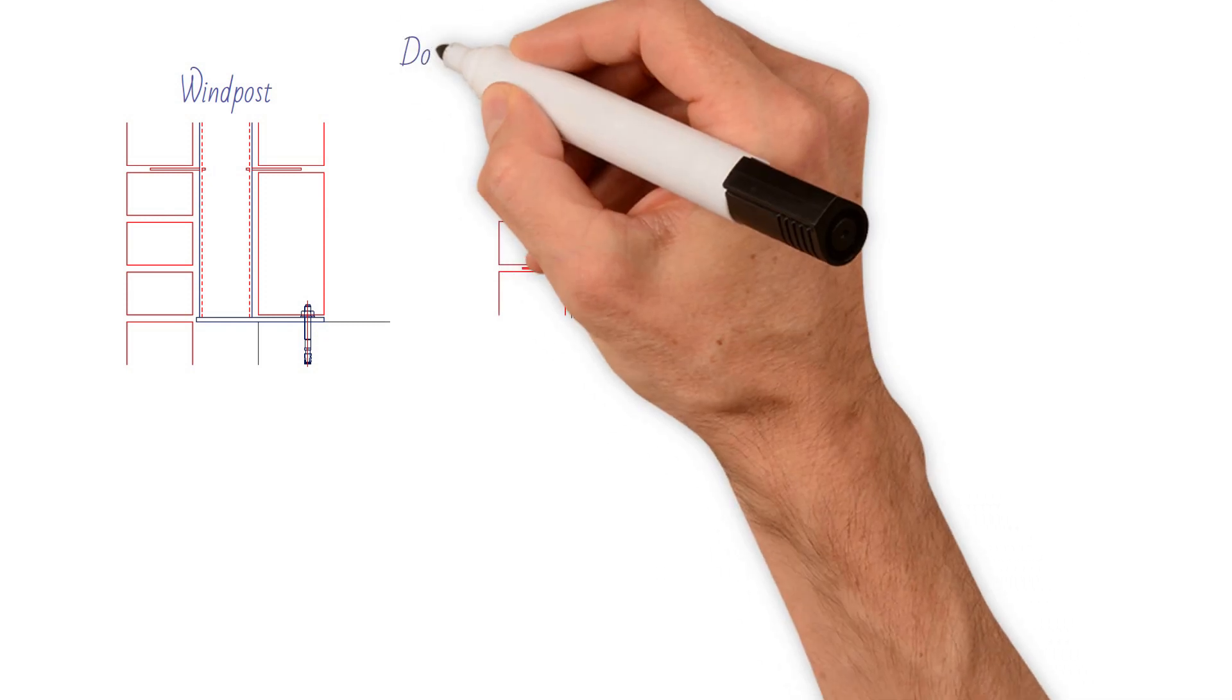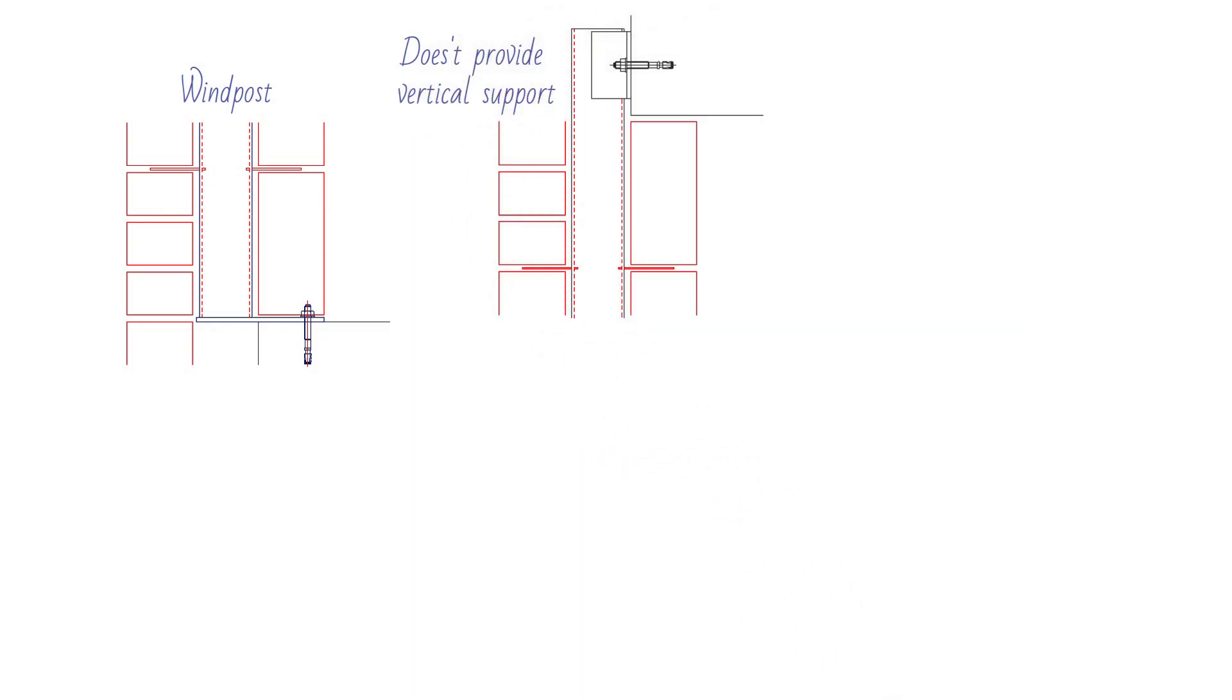A windpost does not provide any vertical support and is restrained at its head. This requires a horizontal structure at the top of the windpost that is strong enough to resist the forces being applied to it.